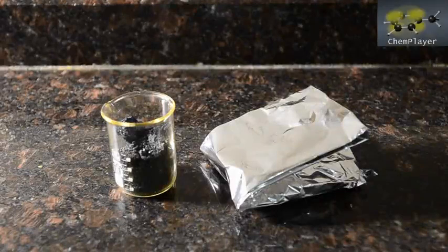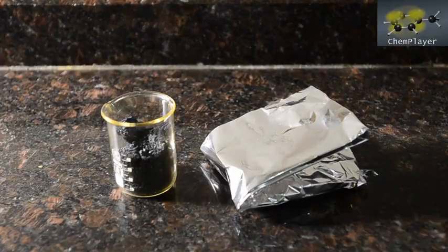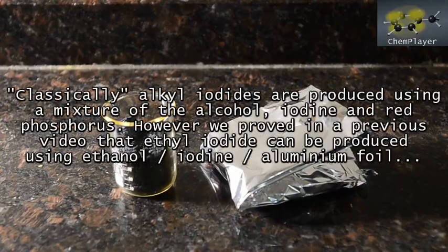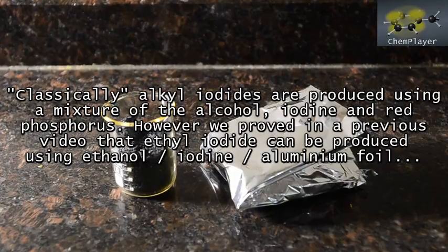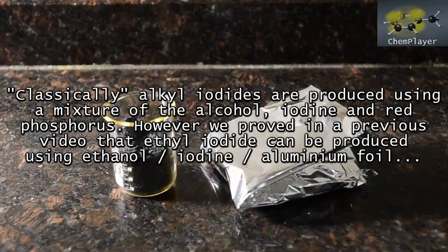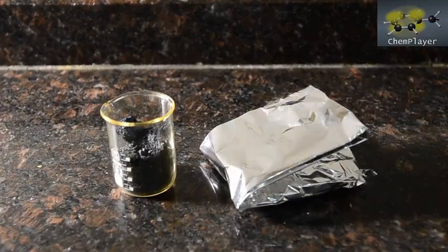We've done this experiment before in the previous video where we used iodine and ethanol to produce ethyl iodide, trying out aluminum foil instead of the classic but hard to obtain red phosphorus. Today we're going to do it again but this time using methanol. If it works, the product should be methyl iodide.